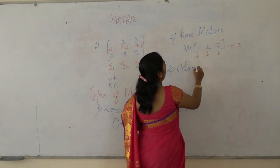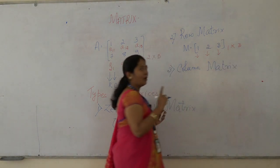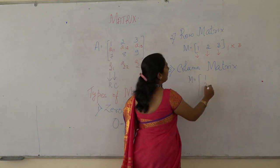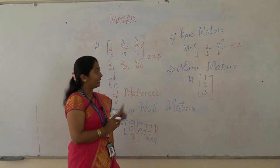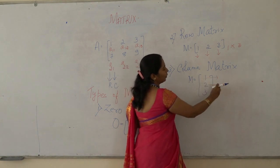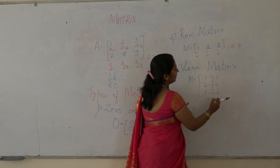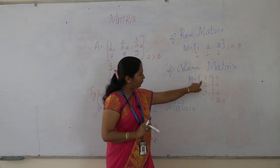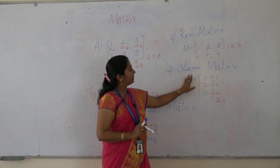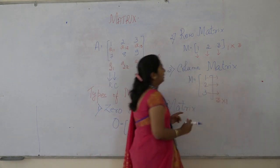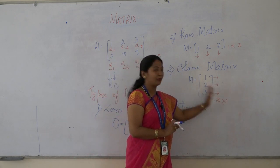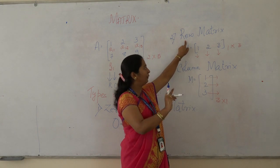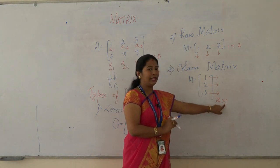The third type is column matrix. A matrix containing only one column is known as a column matrix. For example, matrix M contains elements 1, 2, and 3. It has three rows — first, second, and third — and only one vertical column. So its order is 3 cross 1, meaning three rows and one column.